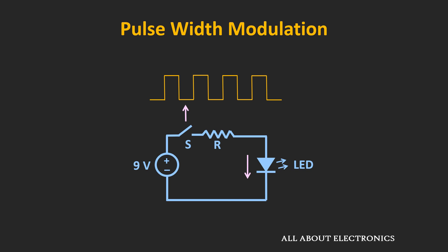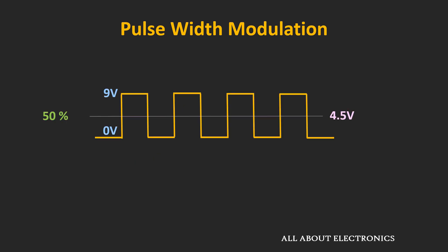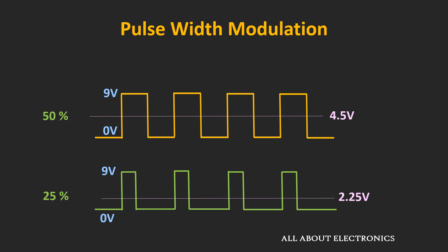If we see the waveform just after the switch, the waveform will look like this. If you observe this waveform, the 9V of voltage is appearing across the circuit only for half of the time. So we can say that effectively only 4.5V of voltage is applied to the LED circuit, or in other words, the average value of the voltage is equal to 4.5V. Now instead of 50%, if the switch remains on only for 25% of the time, the waveform will look different, and the average value is reduced to 2.25V. So effectively only 2.25V is applied to the LED circuit.